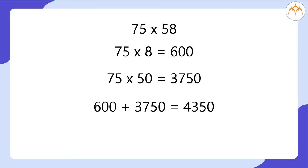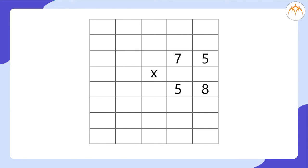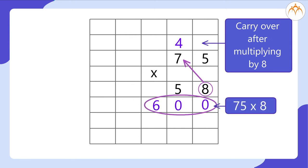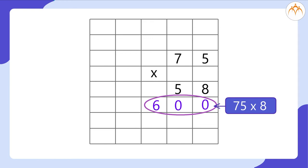How do we do it vertically? First, we multiply 75 by 8. We multiply 5 by 8 to get 40. Hence, we write 0 in the units place and 4 tens are carried over. Next, we multiply 7 tens by 8. We get 56 tens, in which we add 4 tens carried forward to get 60 tens, that is 600. As we have finished multiplying by 8, we will strike off all the carryovers generated after multiplying by 8 to avoid further calculation mistakes.